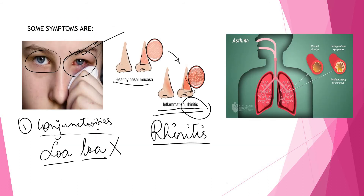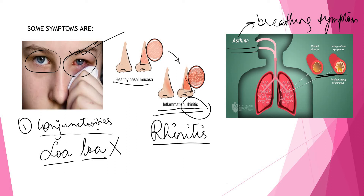Allergens that enter through the skin trigger symptoms such as eczema and hives, and allergens that enter into the lungs cause asthma. Asthma is a breathing symptom which happens when a person comes in contact with some pollen grains, and this starts irritating the inner lining of the lungs. The person will start breathing heavily, as if lacking oxygen.